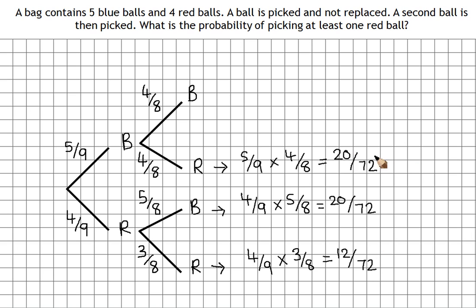Now we want this one, or this one, or this one. So my final stage is then to add those probabilities up. So twenty over seventy-two plus twenty over seventy-two plus twelve over seventy-two gives me fifty-two over seventy-two.